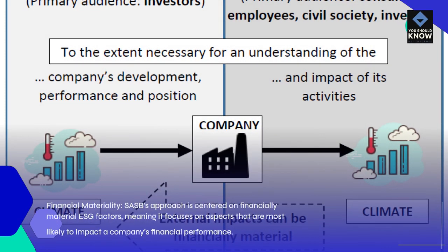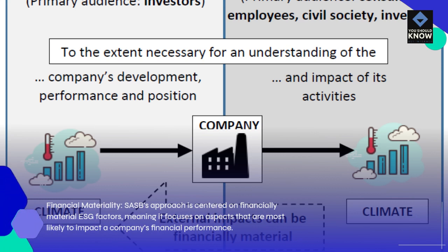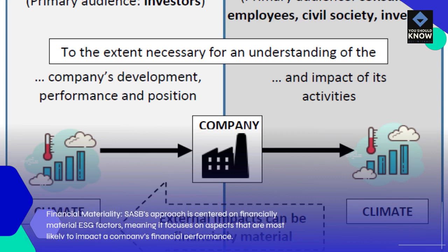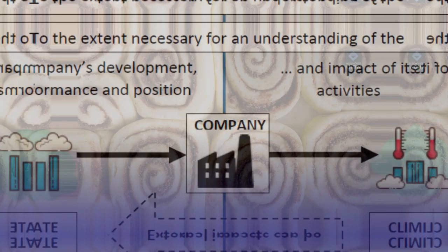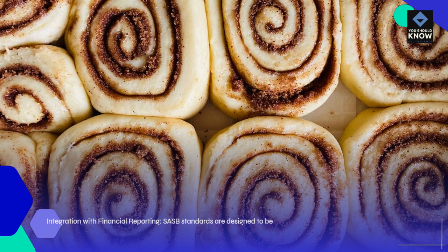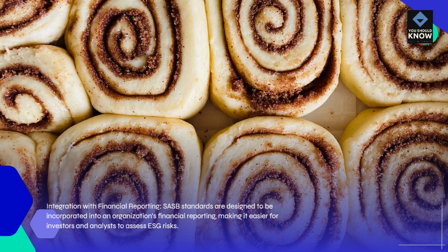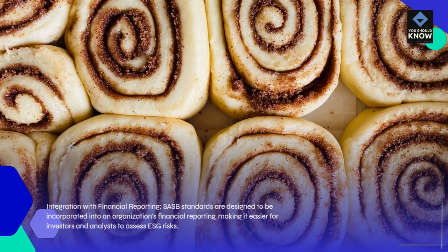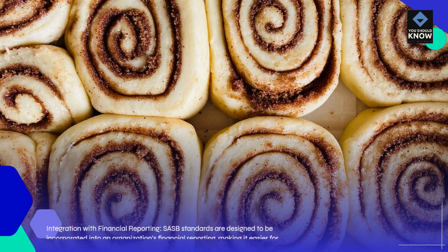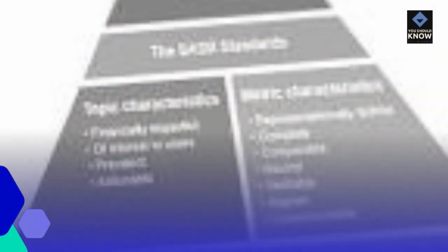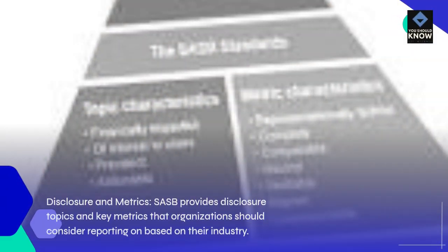Financial Materiality: SASB's approach is centered on financially material ESG factors, meaning it focuses on aspects that are most likely to impact a company's financial performance. Integration with Financial Reporting: SASB standards are designed to be incorporated into an organization's financial reporting, making it easier for investors and analysts to assess ESG risks. Disclosure and Metrics: SASB provides disclosure topics and key metrics that organizations should consider reporting on based on their industry.